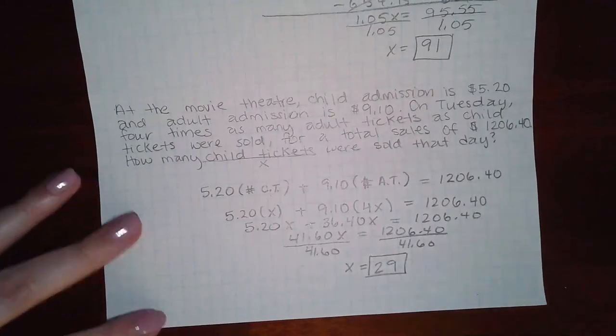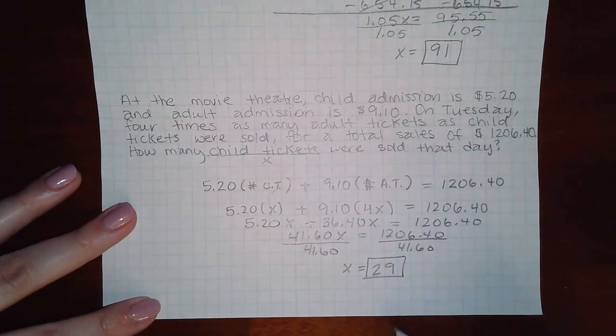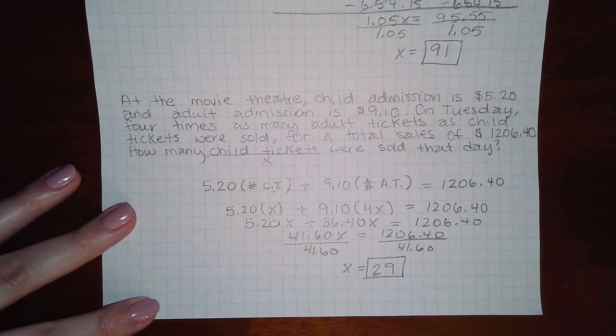And so then that is how many child tickets. Because X represented the number of child tickets, and that's all they were asking for. So we're done.